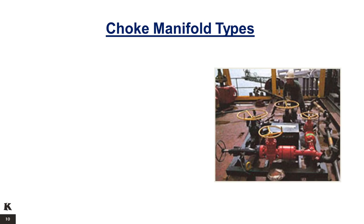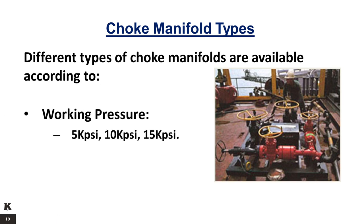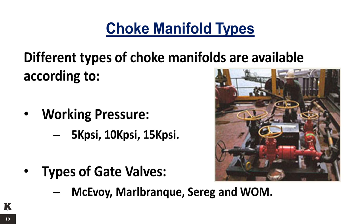Different types of choke manifolds are available according to their working pressure and the type of gate valves. Choke manifolds are available in 5,000, 10,000, and 15,000 PSI. The wide range of choke manifolds available makes it possible to select a choke manifold that accommodates the well tests required while not being larger, more complicated, or expensive than the overall project requires. The choke manifolds have four gate valves arranged so that flow can be directed through either the fixed or the adjustable choke. The valves are opened and closed by handwheels. Types of valves available include McEvoy, Marlbranck, Sarig, and WOM.